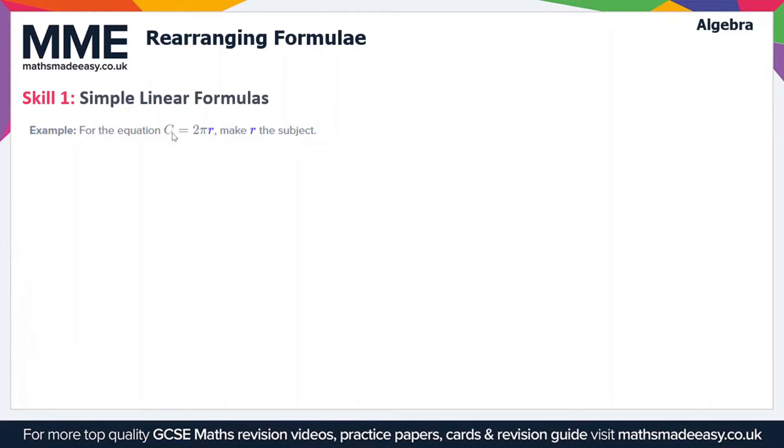In this example we have the equation C = 2πr and we want to make r the subject. So what do we mean by that? Well, this means we want to get r on its own on one side of the equation and everything else on the other side.